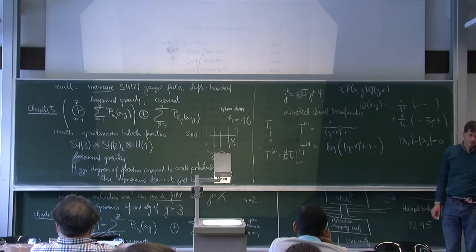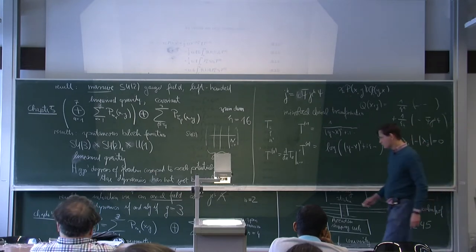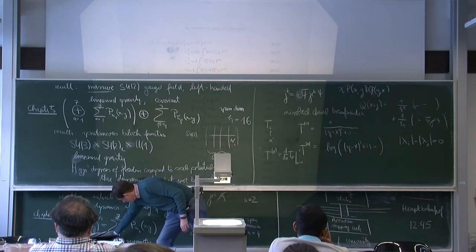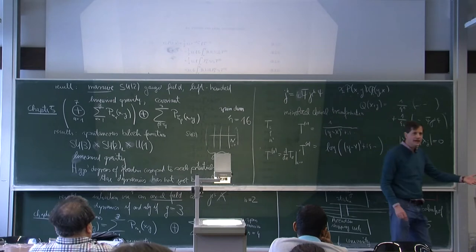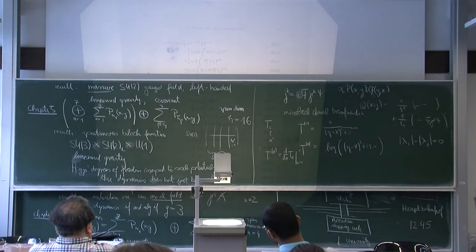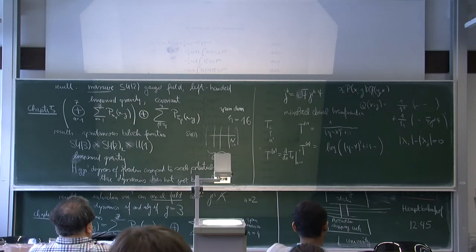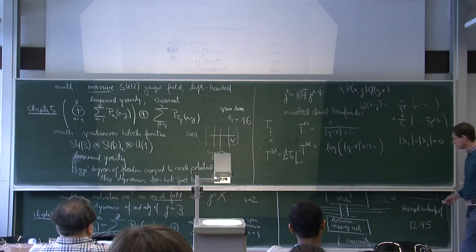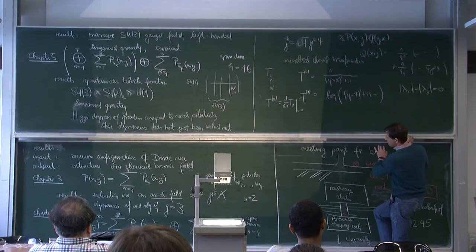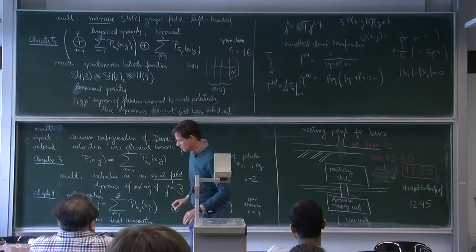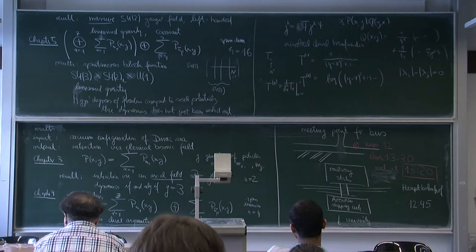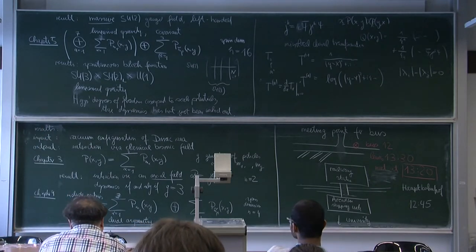The chiral asymmetry is put in by hand as part of the vacuum configuration. Let me explain intuitively why the Dirac-sea configurations are minimizers. Let me show you this intuitive picture, which is also related to what I showed on Monday, namely the connection to the causal structure.